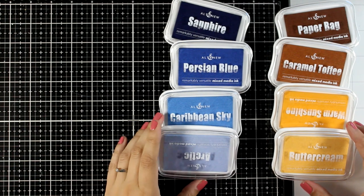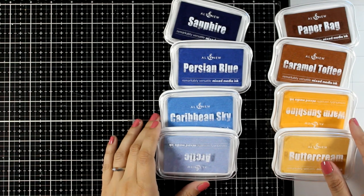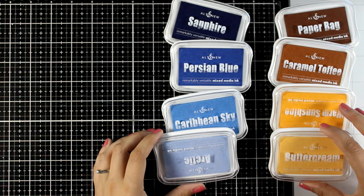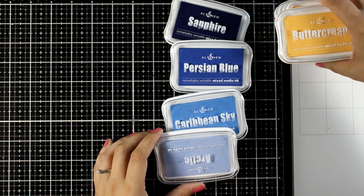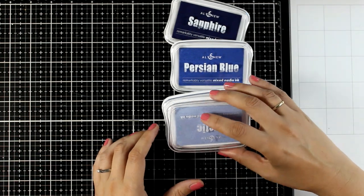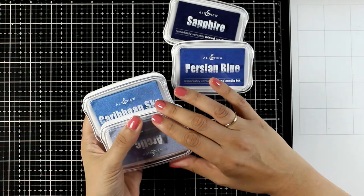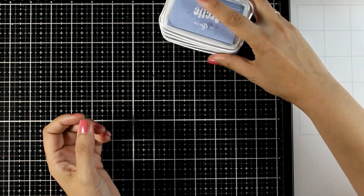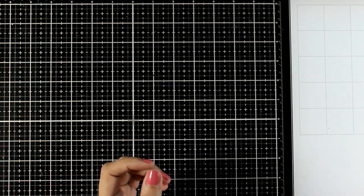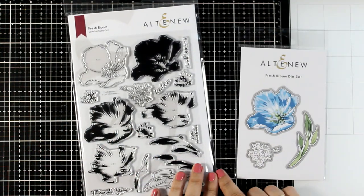Now in this new release, apart from stamps, dies and stencils, you will find new shades of ink. This is their mixed media ink which dries completely permanent and you can use it to stamp on various surfaces including fabric. And I will be playing with the blue shades today which I absolutely love.